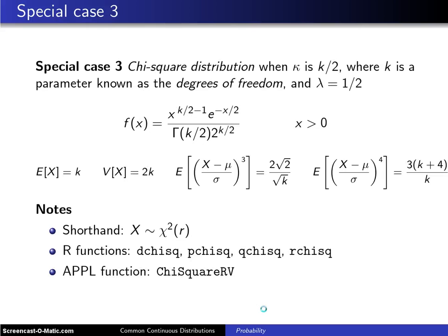And now the third special case is known as the chi-square distribution. When the shape parameter kappa is equal to k over 2, where k is a parameter that is known as the degrees of freedom, and furthermore, when the lambda is equal to one-half, you get the following distribution. Notice this is only a one-parameter distribution; it's only k which appears here, here, and there.